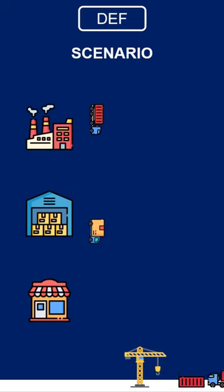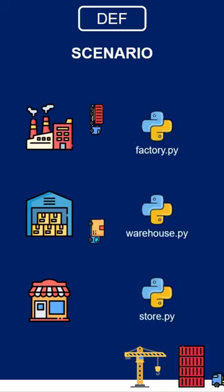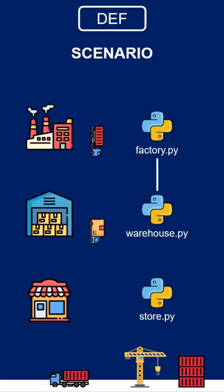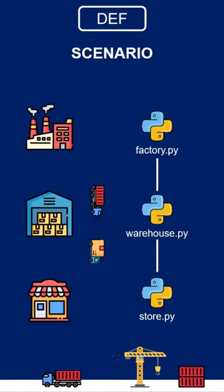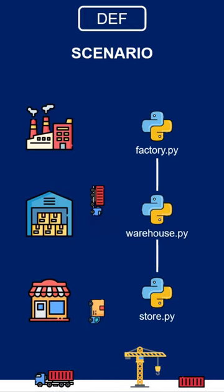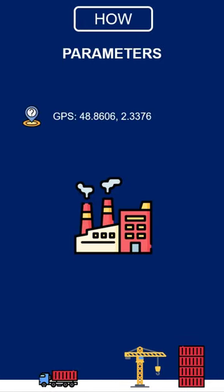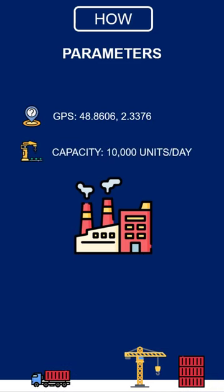For each process we can develop a Python model. These models can be connected to simulate flows. You can collect data on the various components and processes of the supply chain, such as location and capacities of warehouses, and routes and capacities of transportation networks.